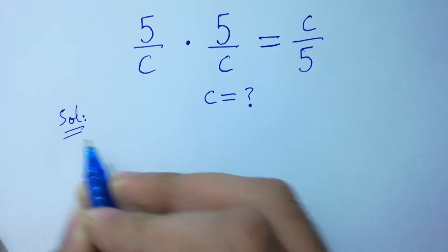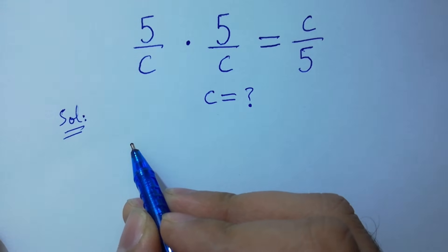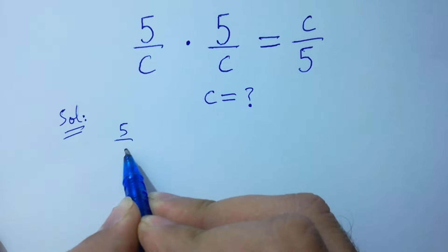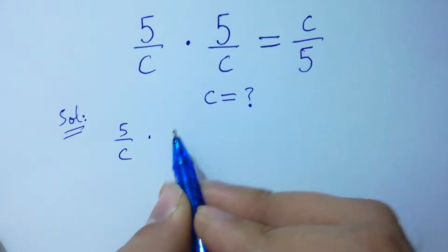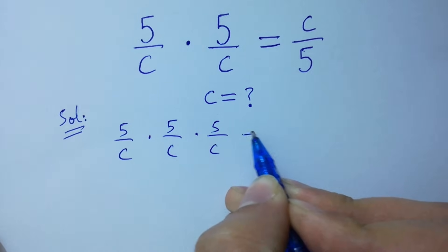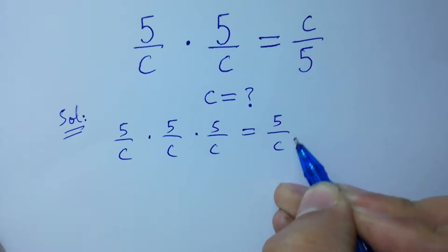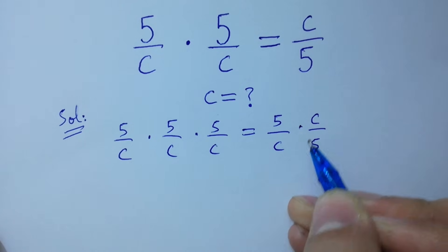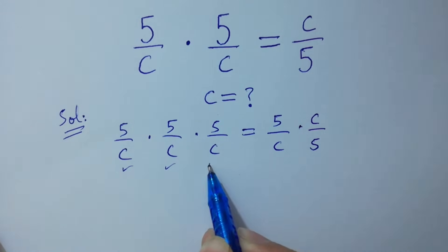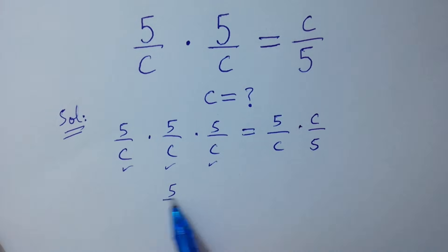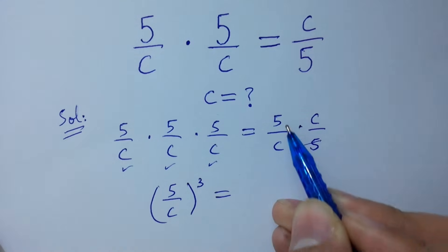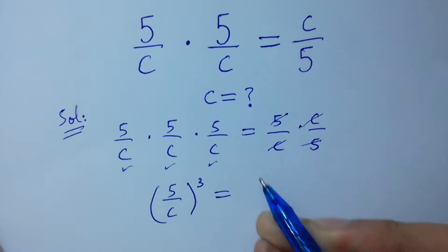To solve this, first of all, multiply by 5 over c on both sides: 5 over c times 5 over c times 5 over c equals 5 over c times c over 5. Since 5 over c is repeated 3 times, it will be 5 over c cubed equals 1, as 5 and 5 and c and c will be cancelled.